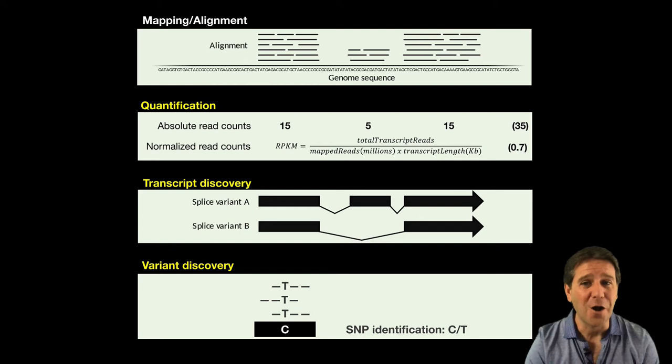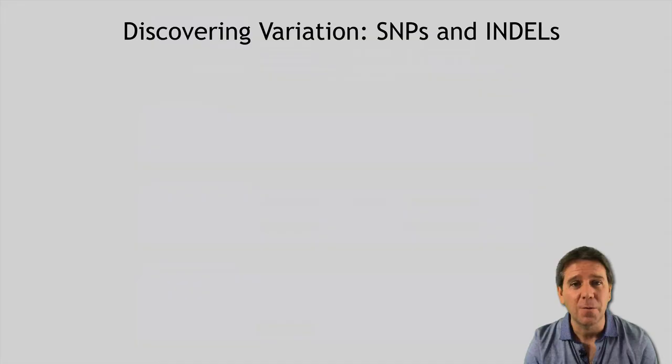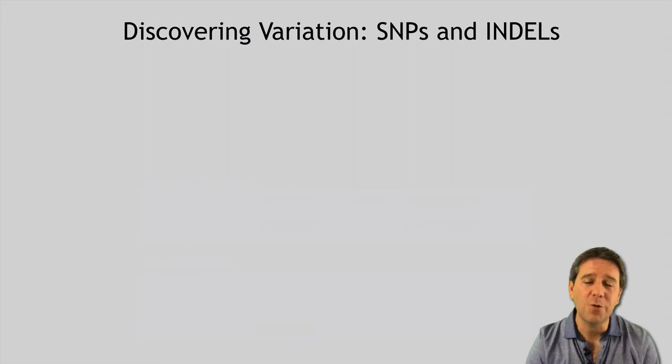With enough sequencing coverage, we can see evidence for things like single nucleotide polymorphisms or SNPs, where our mapped reads maybe consistently indicate a T in a given position in all these reads but the reference is different, maybe a C for example.